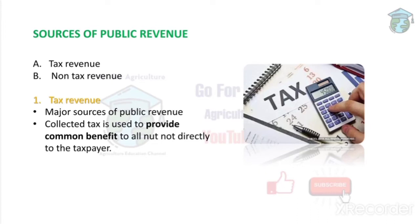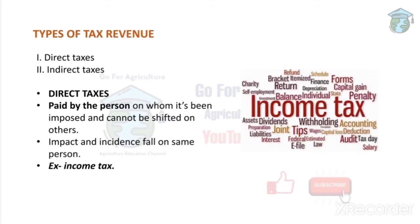In tax revenue, the government collects money from us to provide common benefits. The government can't earn money on its own, so we provide it money to use for common purposes or to help people. Tax revenue is of two types: direct taxes and indirect taxes.